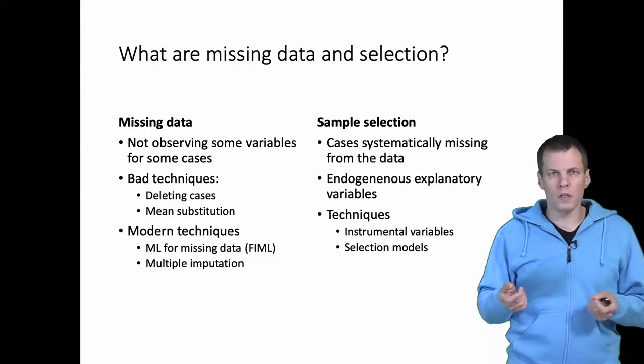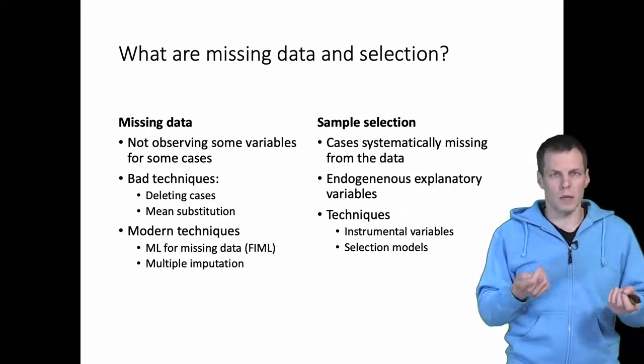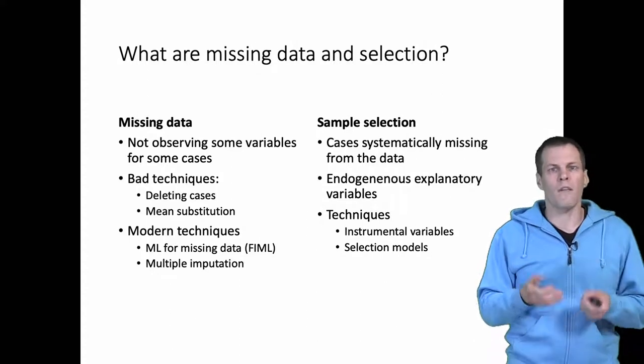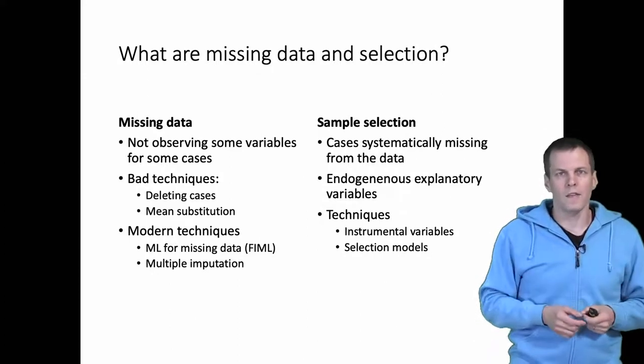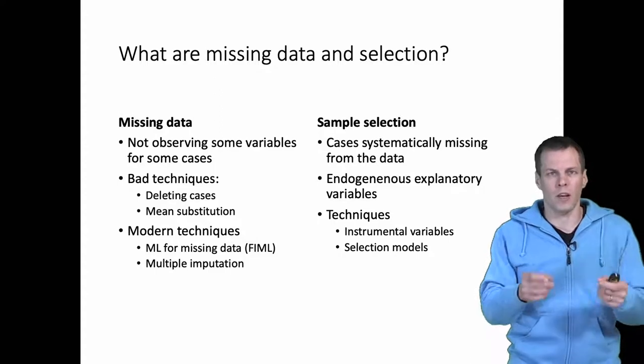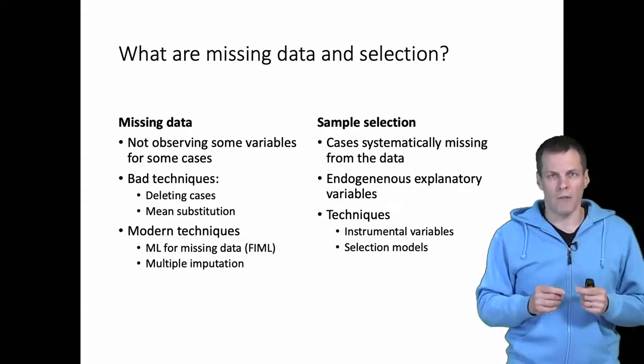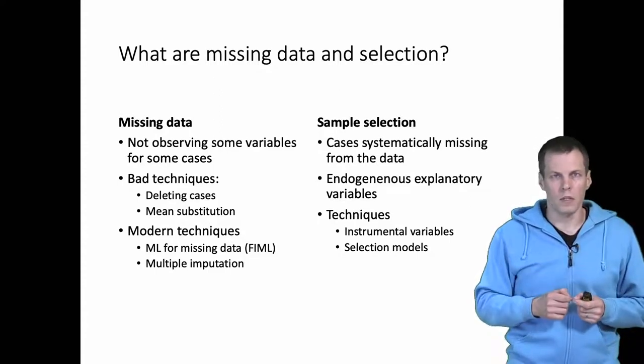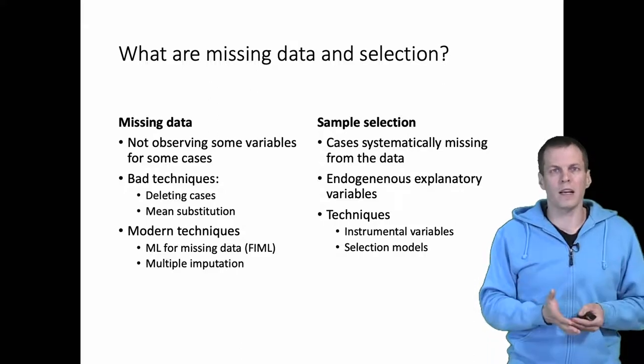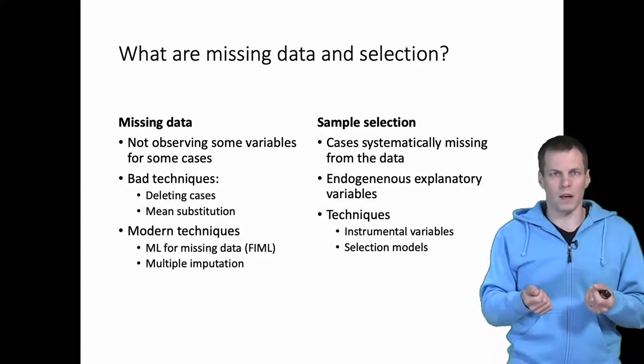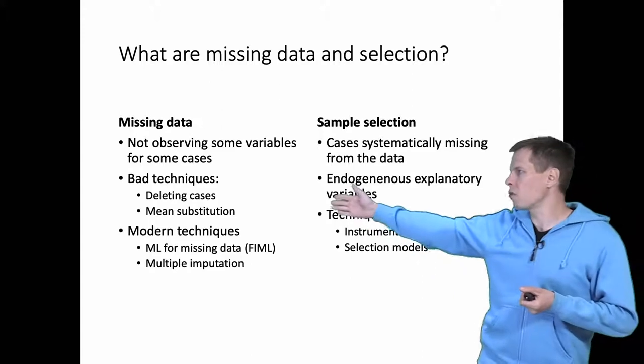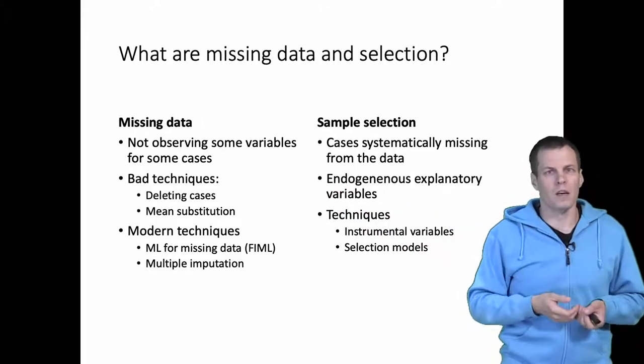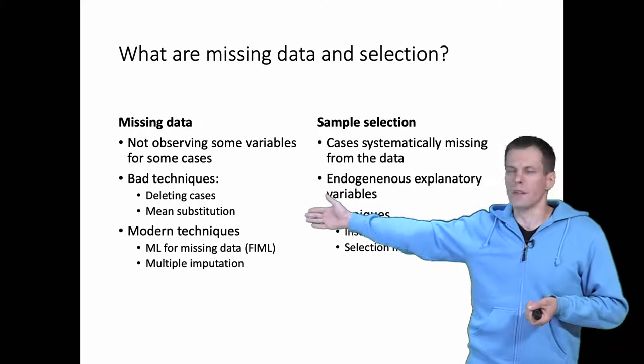Even worse, people use something called mean substitution. If you have a variable that has a missing value for a case, then you take the average of all other cases and use that average in place of the missing value. This is a common strategy and it is always a bad idea. Using dropping cases is a lot better idea than inventing data based on mean substitution.